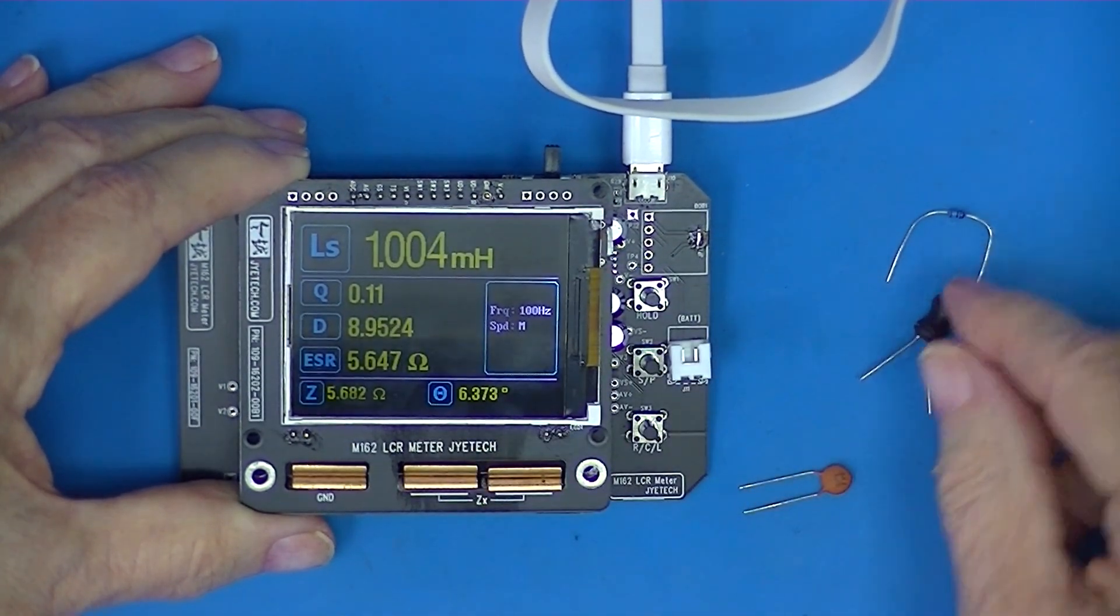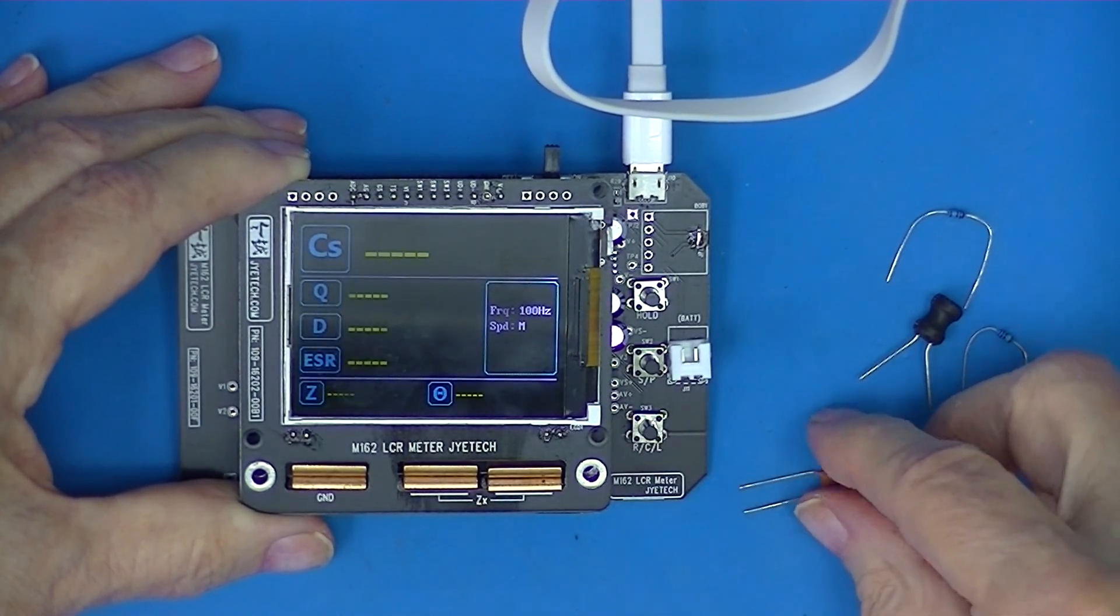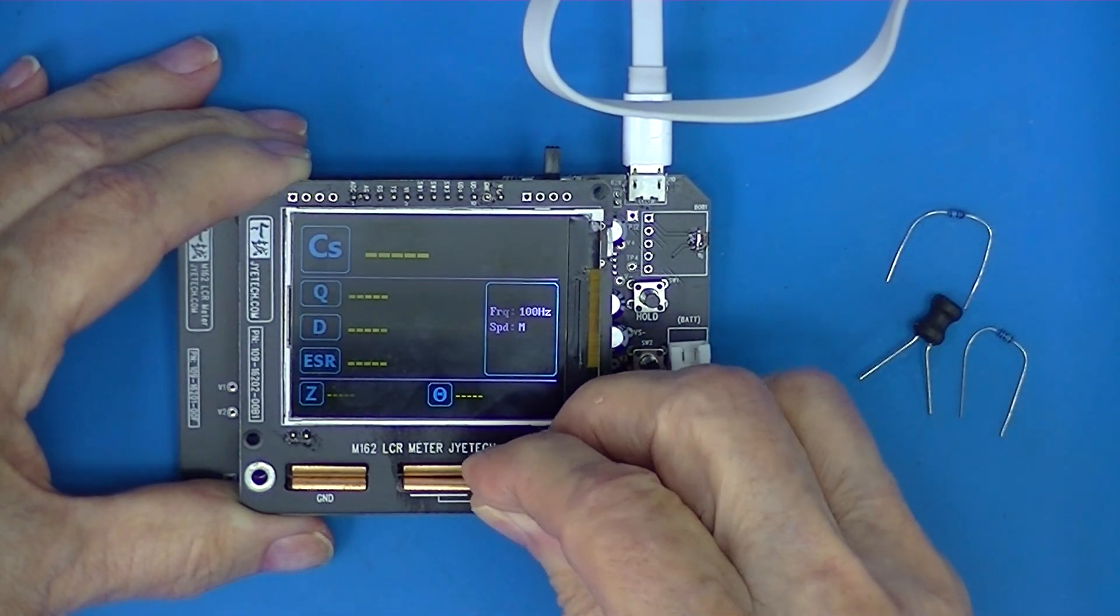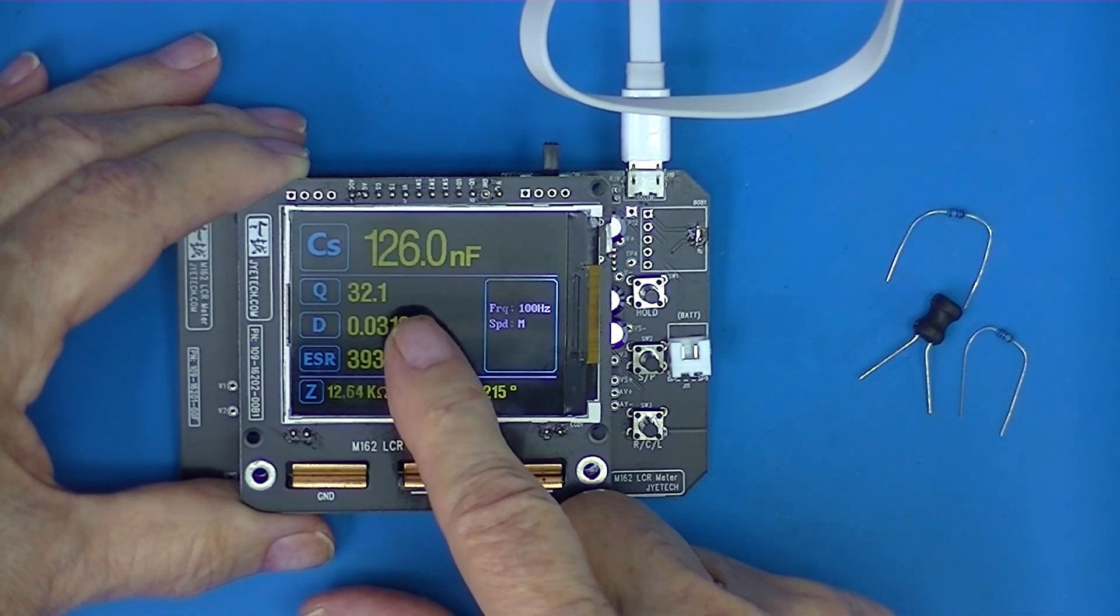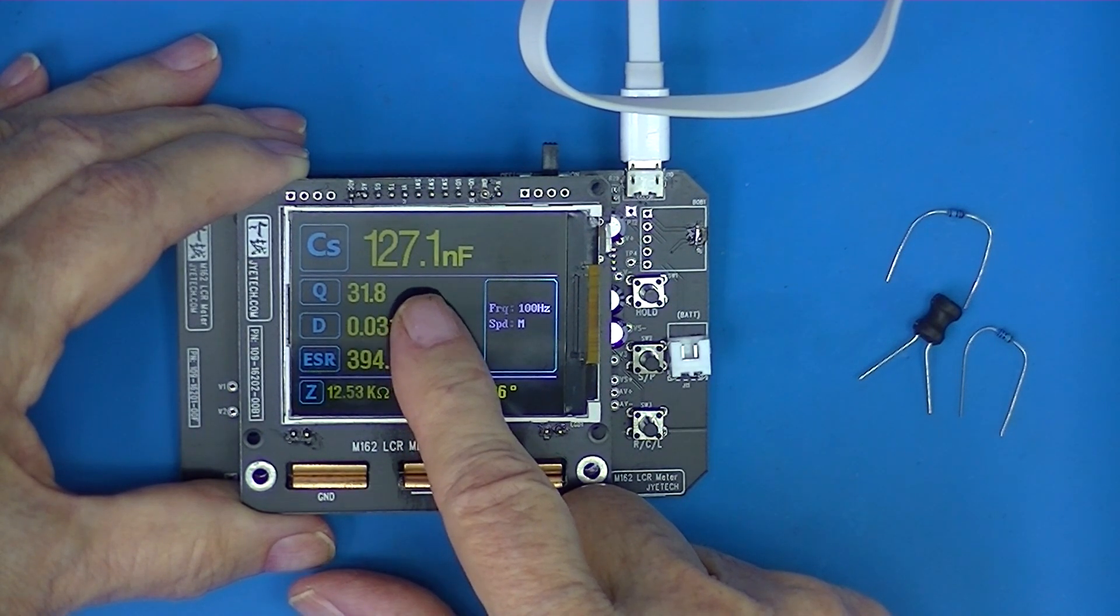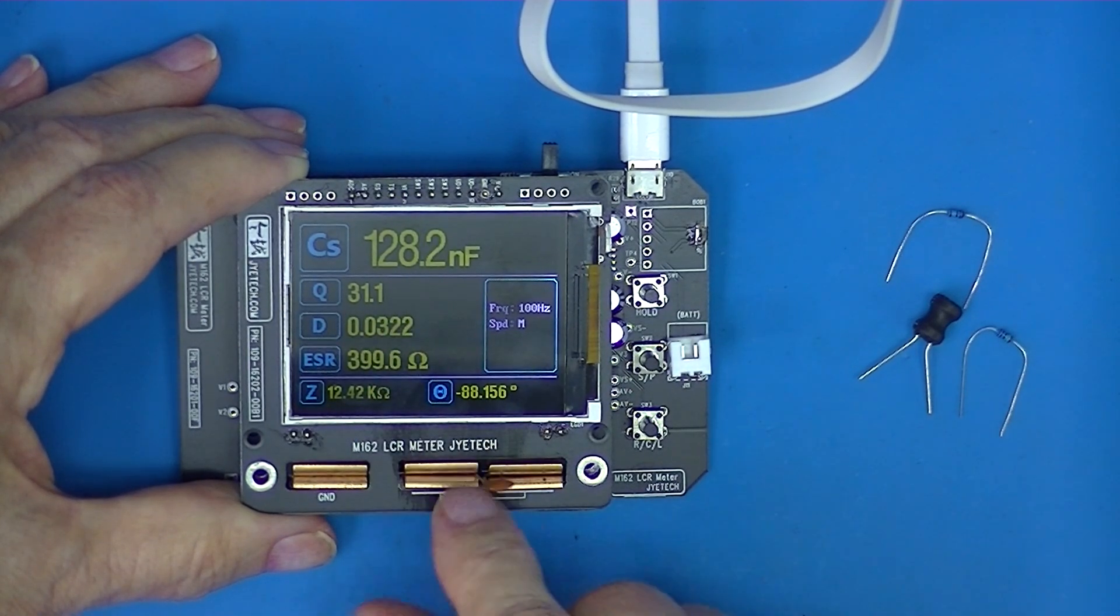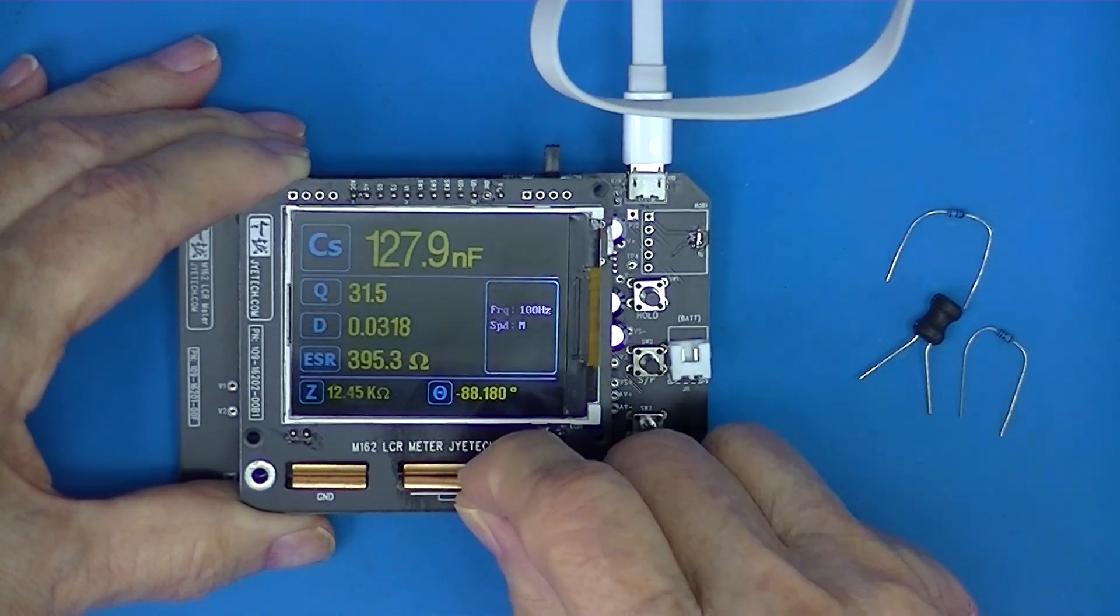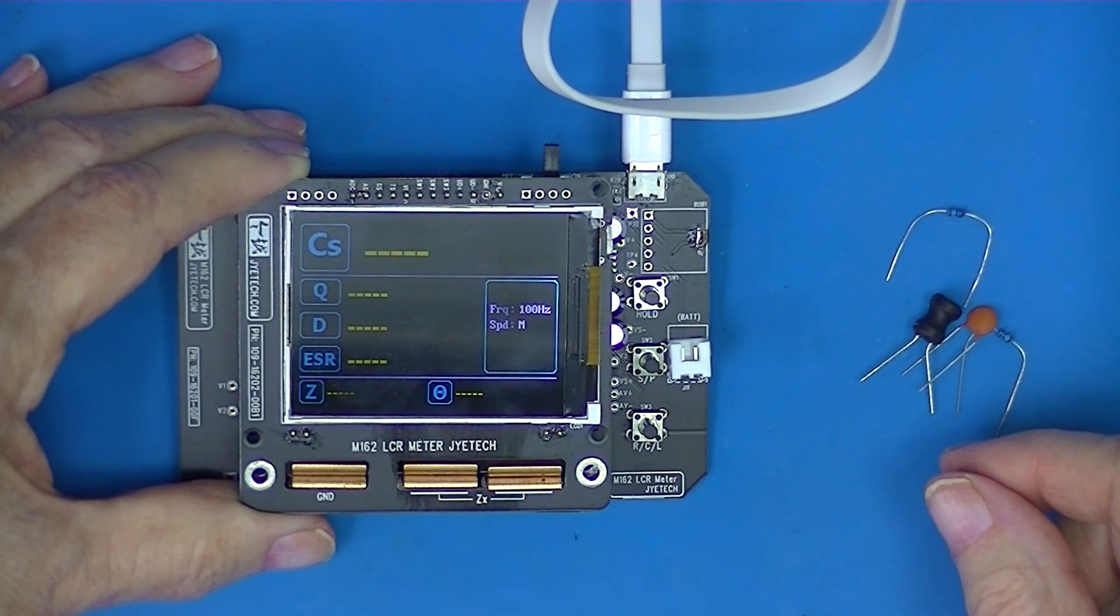And then we'll change to capacitor. There we have 100 nanofarads, which would be equal to 0.1 microfarads. That may be a little high, but this is a pretty cheap capacitor. Take it out—it should go back to null. There we go.